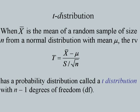This requires the use of another distribution called the T distribution. When X-bar is the mean of a random sample of size n from a normal distribution with mean mu, we define the random variable T = (X-bar minus mu) divided by (S by root n), where S is the sample standard deviation — also called the standard error. S by root n is called the standard error of X-bar.